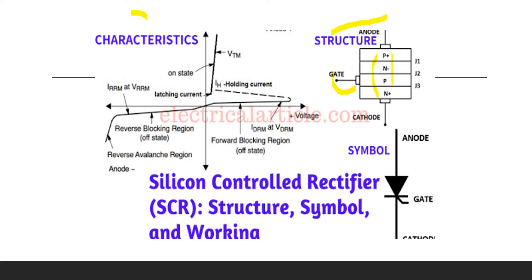The gate is connected to the base of the second transistor, that is the NPN transistor. Similarly, the same IV characteristics are obtained as in the case of the PNPN diode.